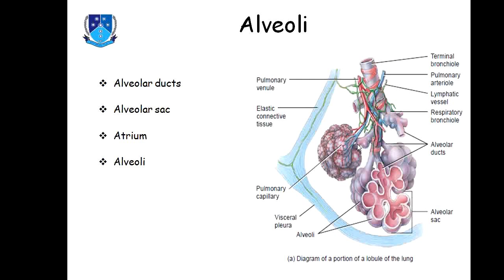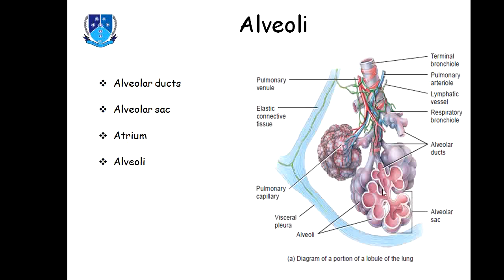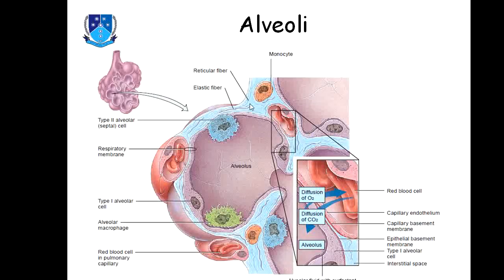Each alveolus is a thin membrane structure, round in shape, surrounded by a network of capillaries where gas exchange takes place. Each alveolar sac has a midpoint area where alveoli are connected to each other, and the gap-like structure in between is called the atrium.